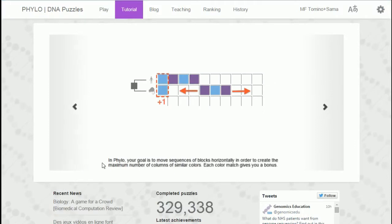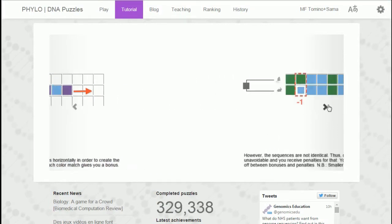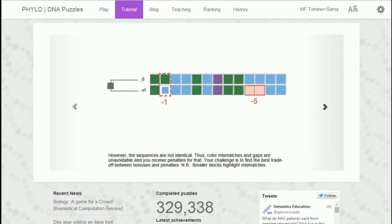So basic rules and tips. In Phylo, your goal is to move sequences of blocks horizontally to create maximum number of columns of similar colors. Each color match gives you a bonus. However, the sequences are not identical, so color mismatches and gaps are unavoidable and you receive penalties for that. Your challenge is to find the best trade-off between bonuses and penalties.